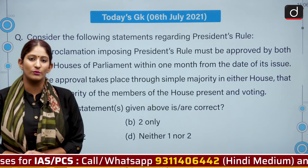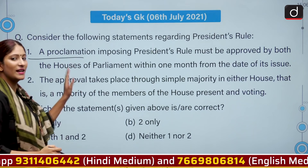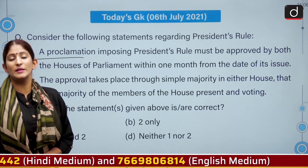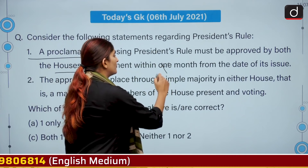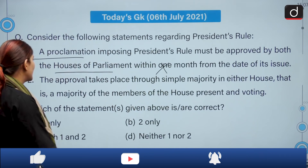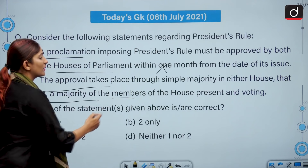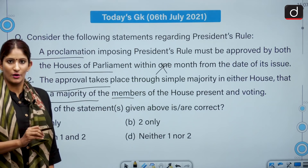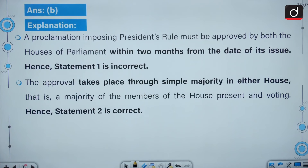If we talk about President's Rule under Articles 356 and 365: the first statement is incorrect because a proclamation of President's Rule must be approved by both Houses of Parliament within two months from the date of its issue. The second statement is correct — approval takes place through a simple majority in either House, meaning a majority of members present and voting. So the correct answer is option B: two only.